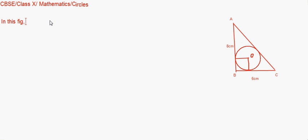In this figure, triangle ABC is a right triangle, right angled at B. AB is given, BC is given. You have to find the radius of the circle.